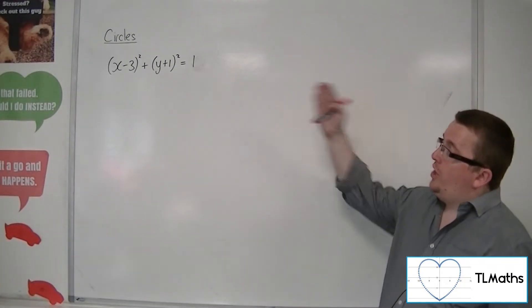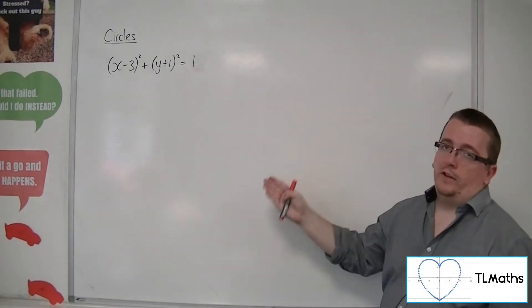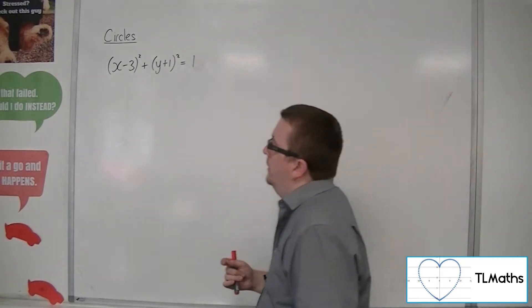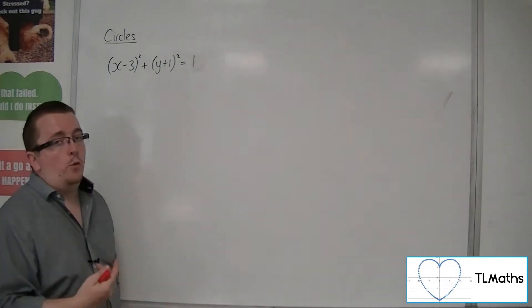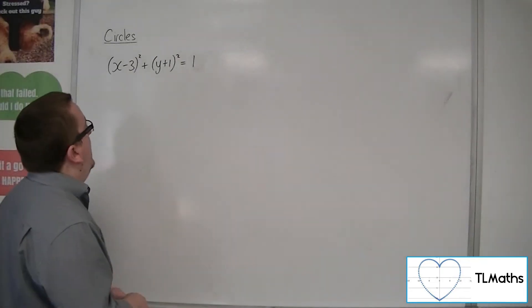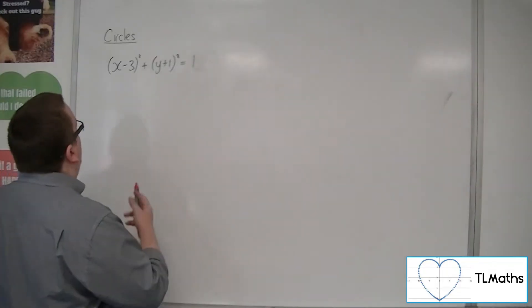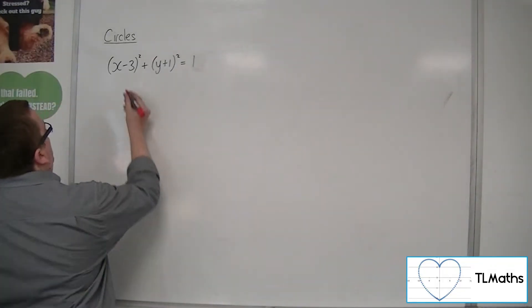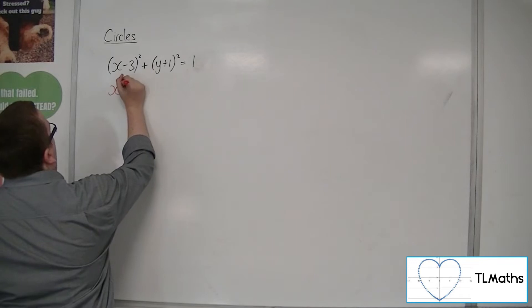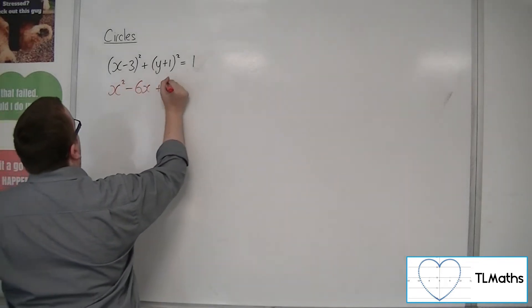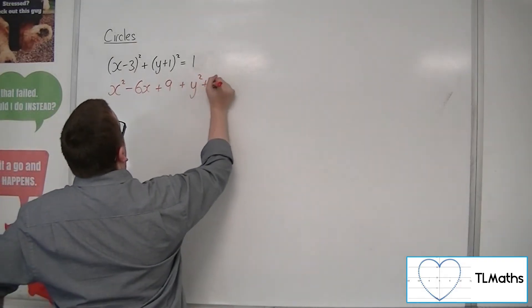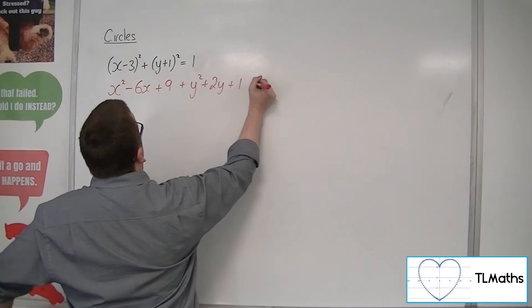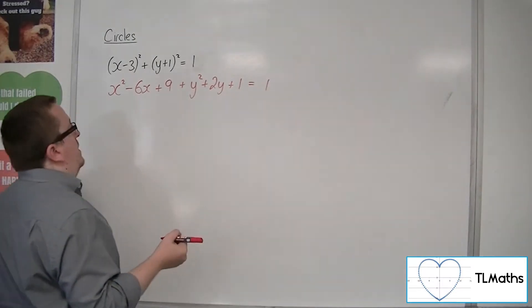This is the general form for the equation of a circle. But you could write this in a different way. If I multiply out all the brackets, we would have x squared minus 6x plus 9 for the first bracket. Then the second bracket will be y squared plus 2y plus 1, and we still have the 1 on the right hand side.